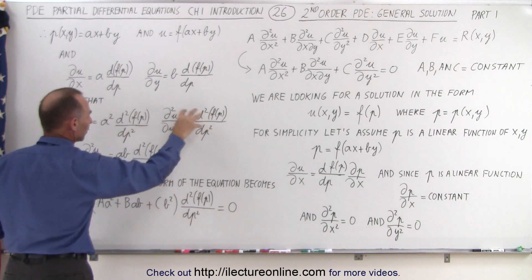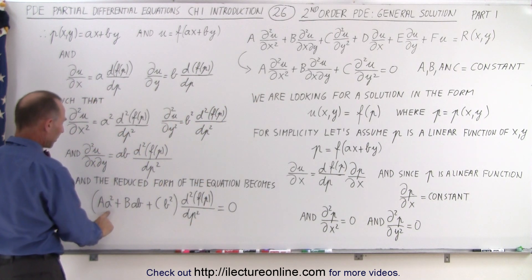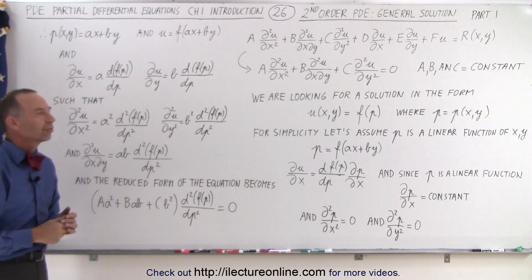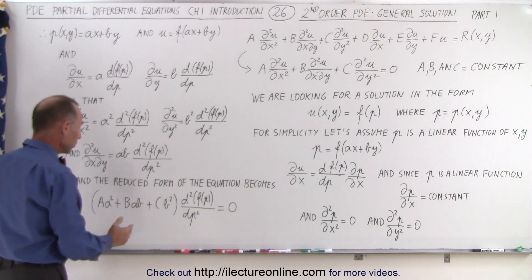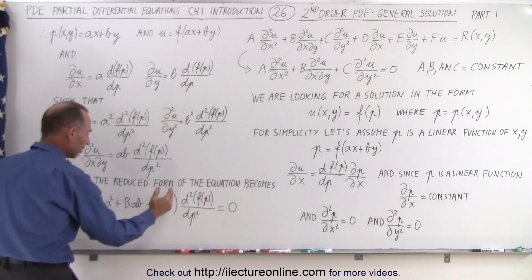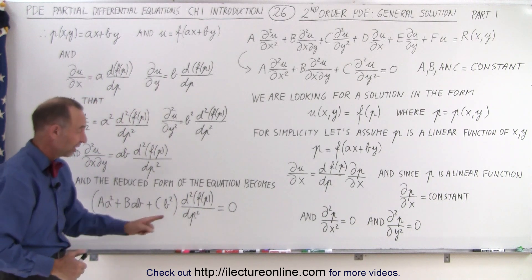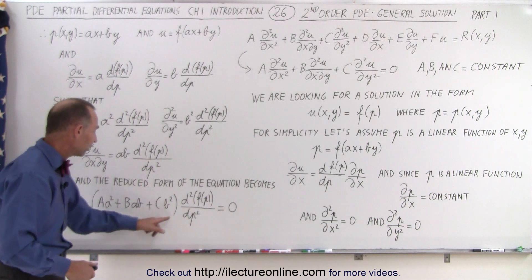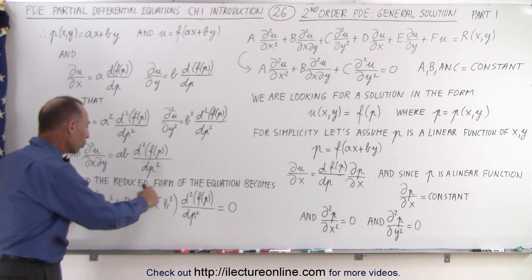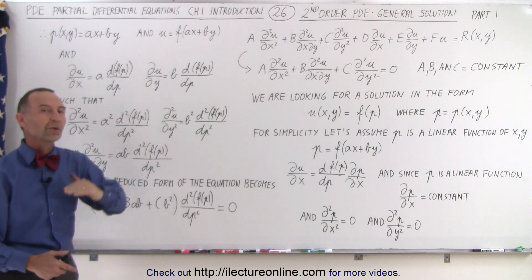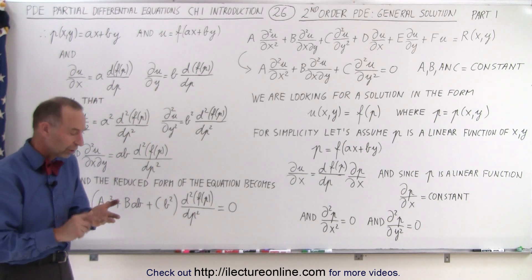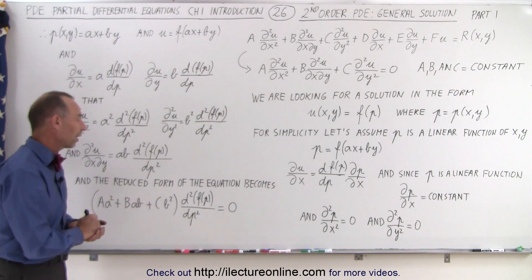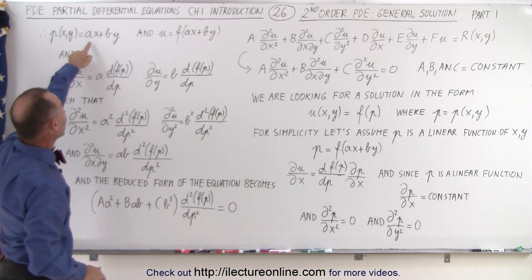Now we see that we have the same common factor, with the coefficient A multiplied by a squared, B multiplied by a·b, and C multiplied by b squared. So we have a reduced form of that simplified equation which we can now actually solve, because now we know that this times this equals zero — which means either the second derivative factor is zero, giving no useful function, or the quadratic expression is equal to zero. Solving that quadratic equation gives us the possibility of three solutions: the hyperbolic solution, the parabolic solution, or the elliptical solution.